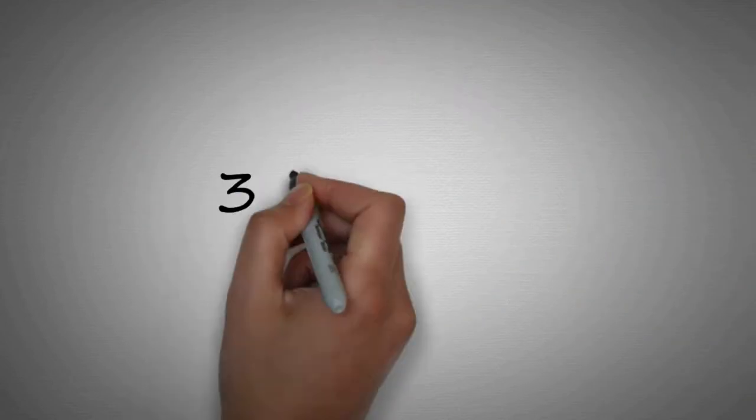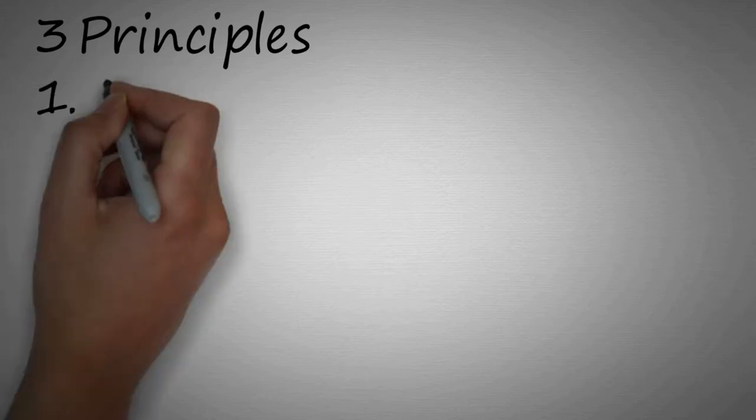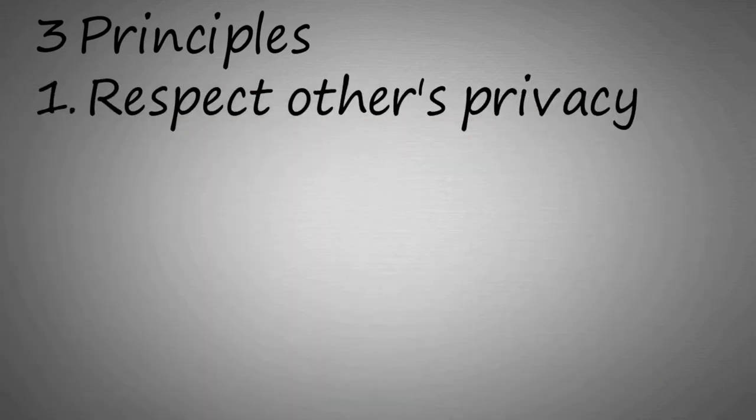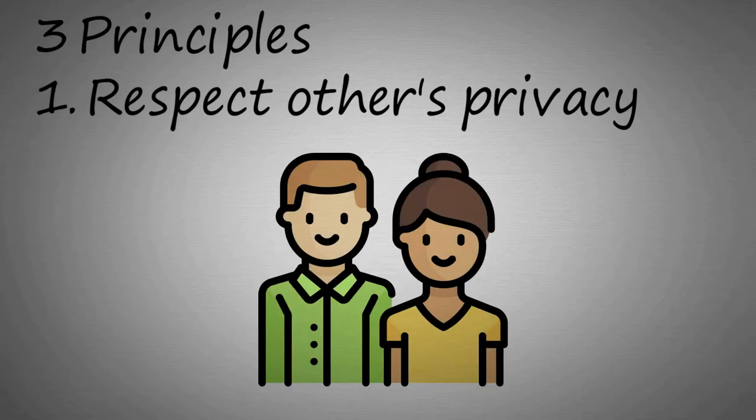There are three principles for you to deal with vertical distance between people. To manage a good relationship with others, you need to respect others' privacy. Sometimes we forget this principle just because we think that we are already very close to each other.